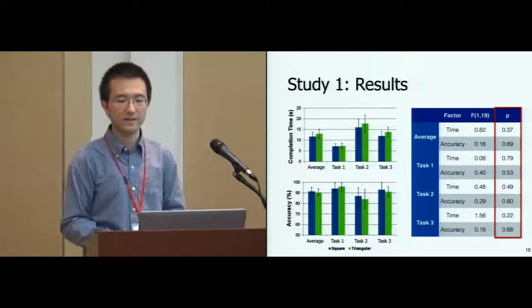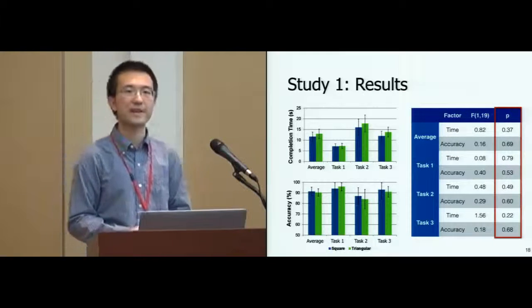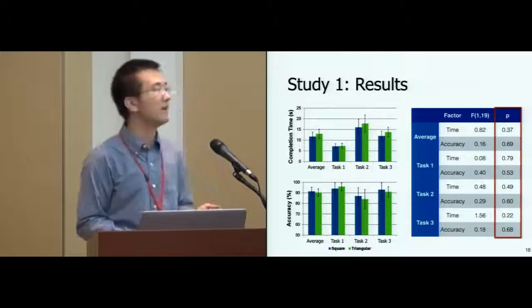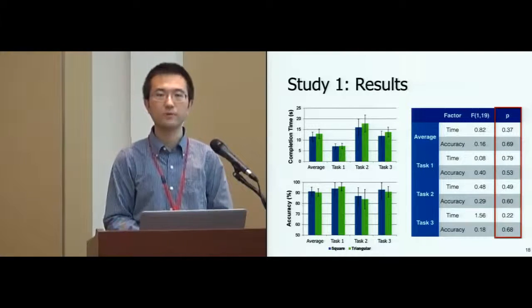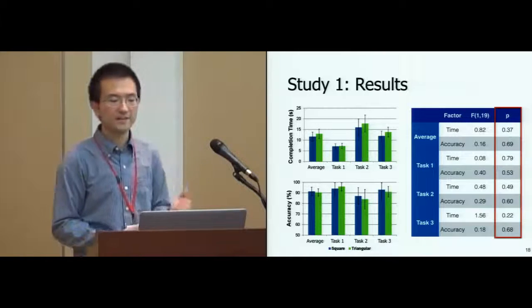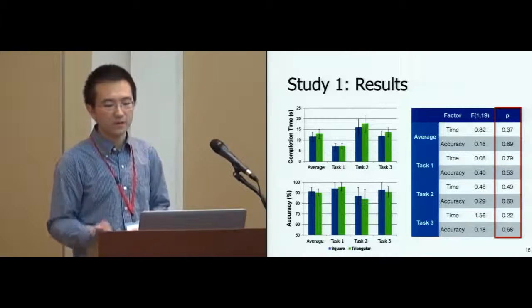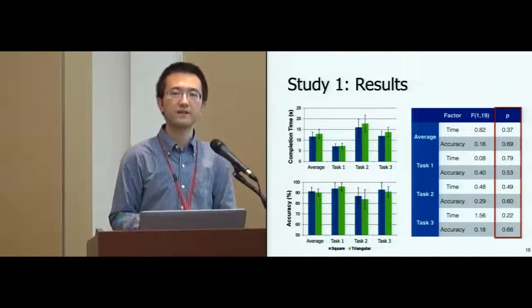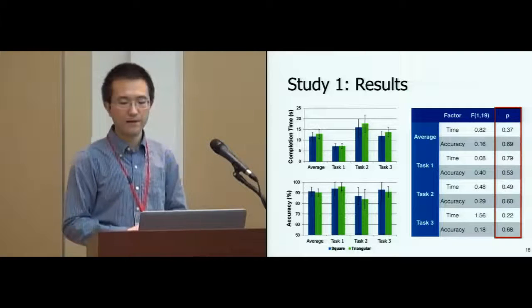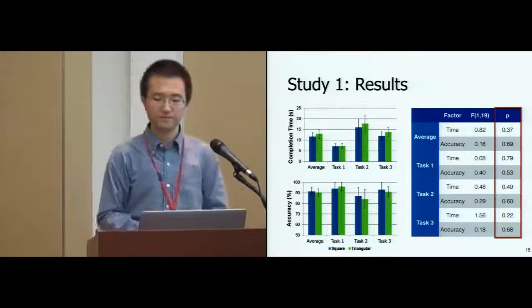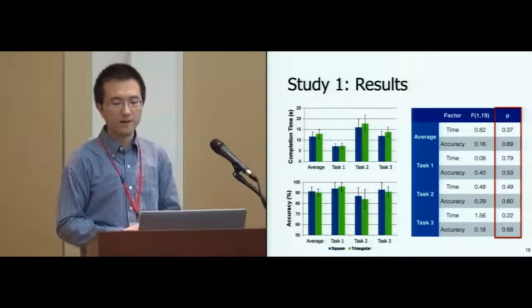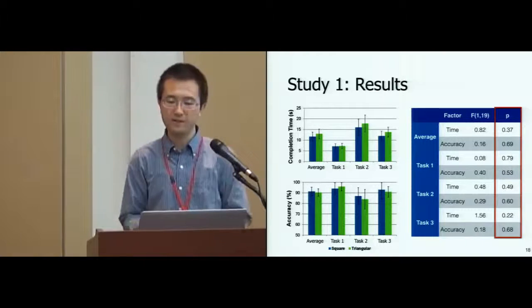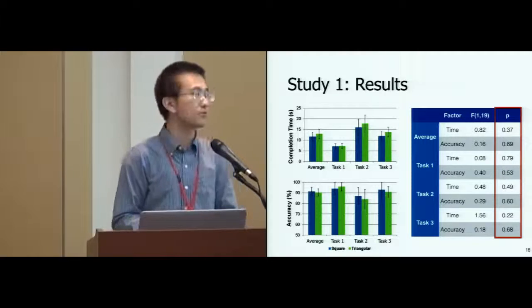For task one, users were able to interpret communities in both representations. For task two, it seems that users did not become significantly slower when following the L-shaped path to view one node's neighbors. Users commented that tracking neighbors was a little bit hard at the beginning, but their speed got faster after the training trials.